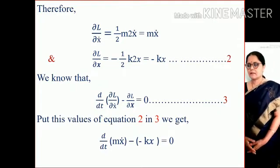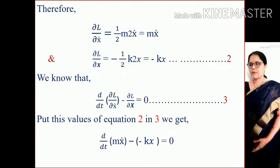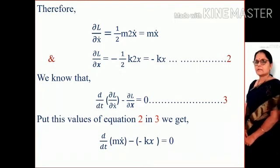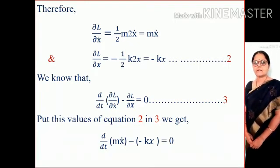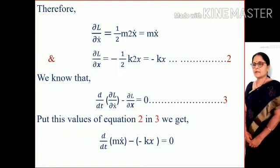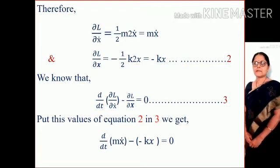Therefore, dL/d(x-dot) equals (1/2) m times 2x-dot, which equals m x-dot. And dL/dx equals minus (1/2) k times 2x, where the 2s cancel, giving minus kx.